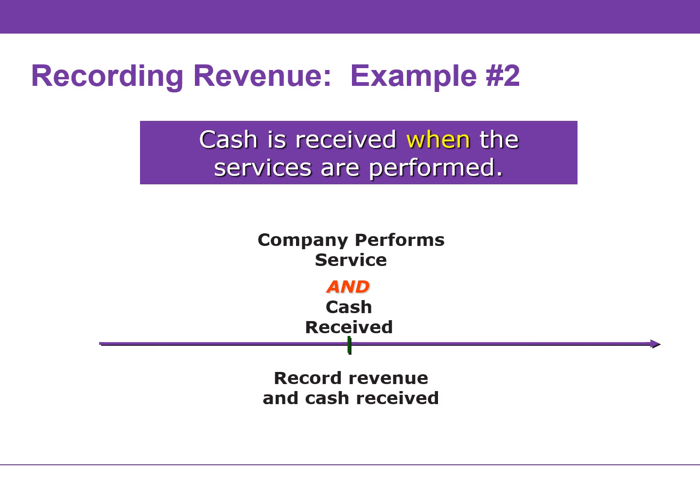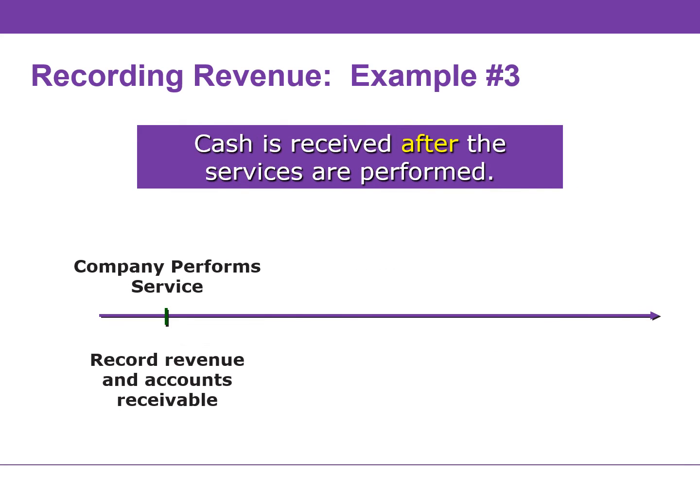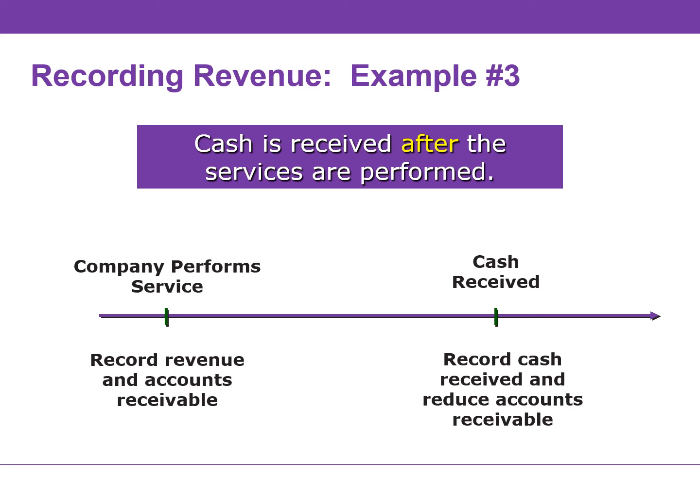Cash can be received on the date the product is delivered or services are performed; if cash is received at the same time, we record both revenue and cash. Companies may also perform services on account, meaning they perform services and are paid at a later date. Revenue is recorded when services are performed, so revenues increase even though cash has not been received. Instead of cash, the company receives a different type of asset — accounts receivable — which represents the amount customers owe us. When the company collects cash from customers, cash increases and accounts receivable decreases. We do not record revenue at that point; it is simply an exchange between assets.